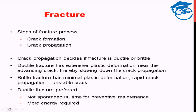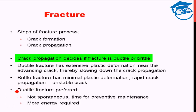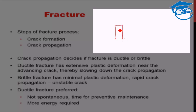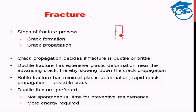The method by which the crack propagates basically decides whether a fracture is ductile or brittle. If a crack is formed on a body, it needs to travel throughout the body for the fracture to be effective — for the material to collapse into two pieces. How the crack propagates through the body defines whether the fracture mode is ductile or brittle.